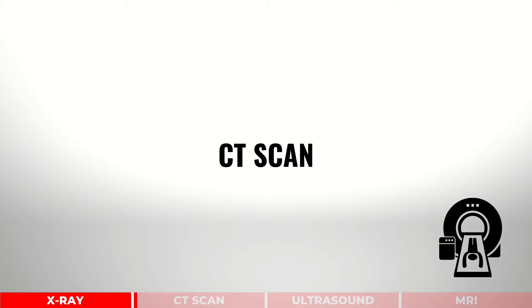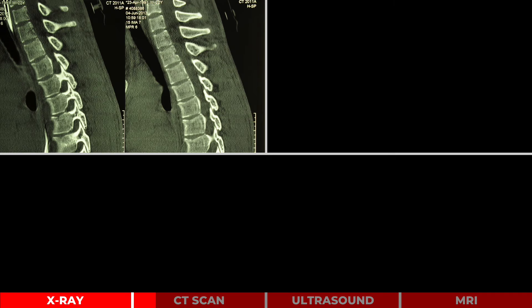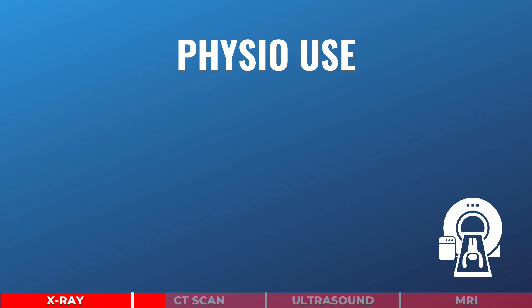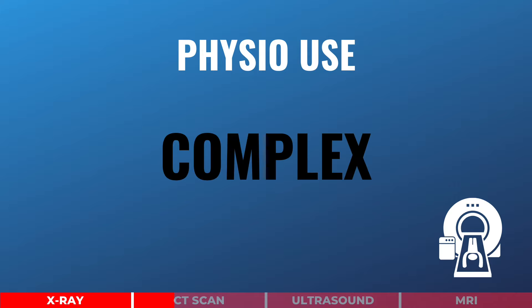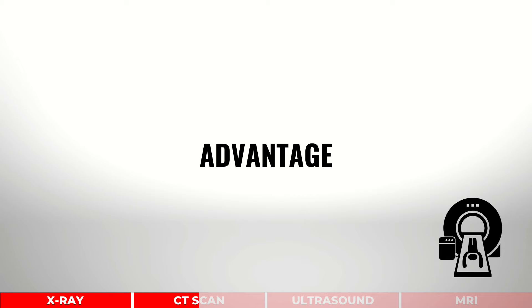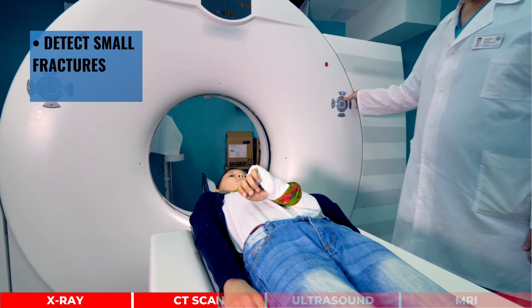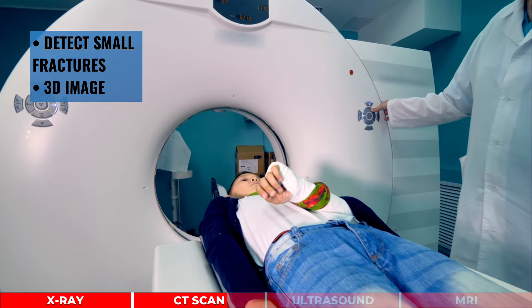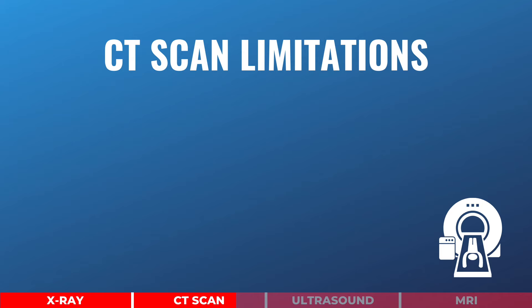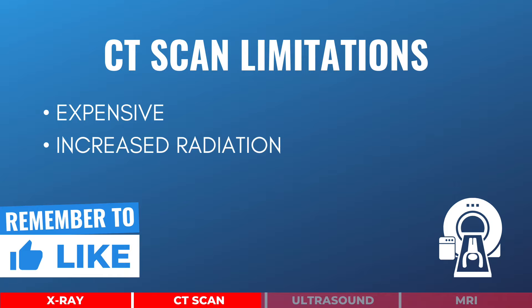CT scan fires a number of X-rays from different angles and can produce a detailed cross-sectional image of the bone, blood vessel, and soft tissues. Physiotherapists commonly use CT scan to evaluate complex regions of the body, including the spine, pelvis, ankle, and foot. CT scan has many benefits: it can detect small fractures that may have been missed on an X-ray, and it can also produce a three-dimensional image which makes it easier to locate the site of injury. CT scan has limitations — it is relatively expensive and, compared to the plain X-ray, it can expose a person to a greater amount of radiation.